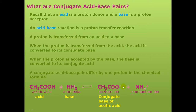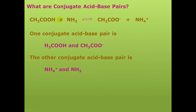The formula differs by one proton. Note that the base will always have one less proton than the acid in its formula. Ammonia, when it accepts the proton to become ammonium ion, is now the conjugate acid of ammonia. So the conjugate acid-base pairs are acetic acid and acetate ion, and ammonium ion and ammonia.